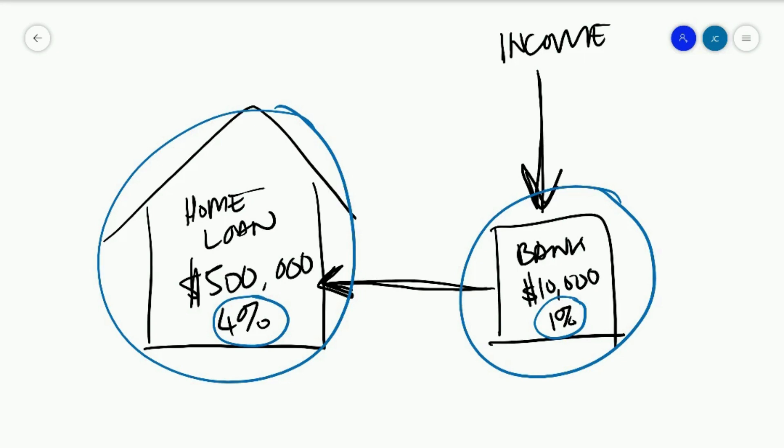So what an offset account does, which is a little bit different to this scenario, it allows this bank account to be linked to this bank account. And so what happens is you forego the 1% interest here, but essentially allowing for this $10,000 in this bank account to be offset against this $500,000 loan.